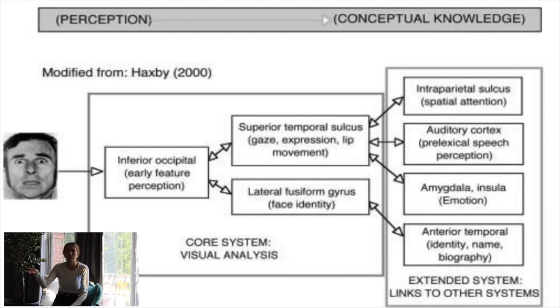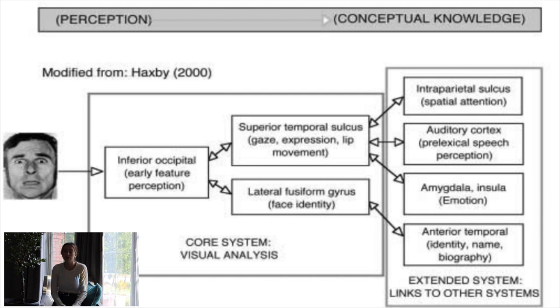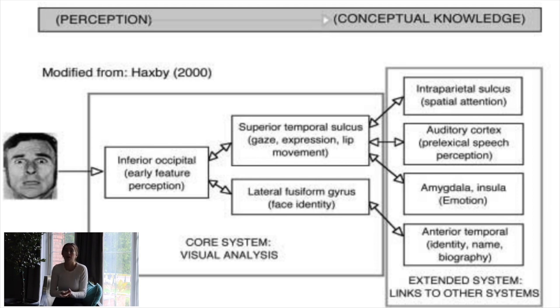Once that information gets into the occipital lobe, we discern different things about the subject through two streams. We figure out what the subject is, who they are, recognizing them, and also their emotion. To figure out who somebody is, that information is relayed to the fusiform gyrus, which is part of the fusiform face area that helps us identify who people are. This area only lights up when people look at faces — not at houses, cars, cameras, or anything else. It's a specific area developed for us to identify people.